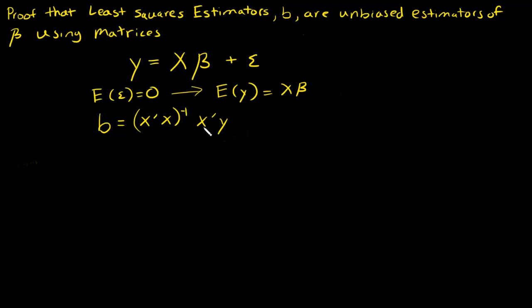In this video what we want to figure out is what's the expected value of B? If we can figure out what this expected value of B is, and hopefully it is beta, then we've shown that B is an unbiased estimator of beta.